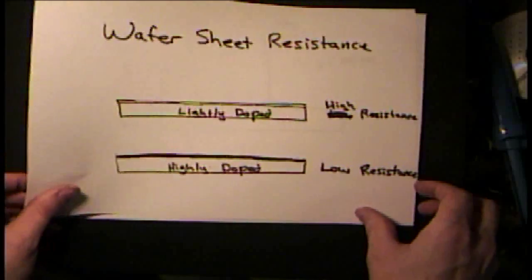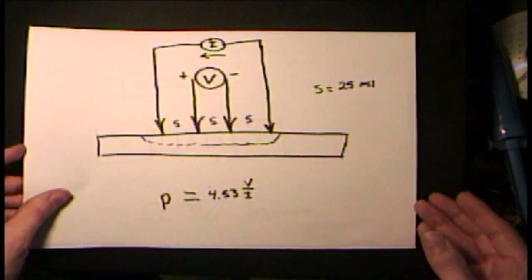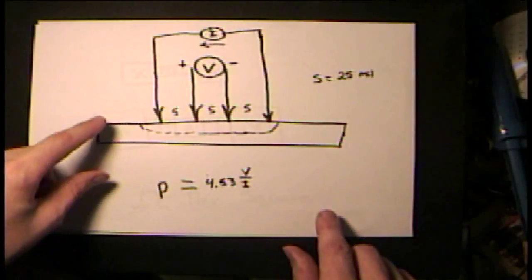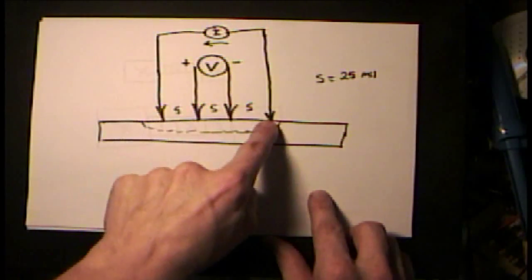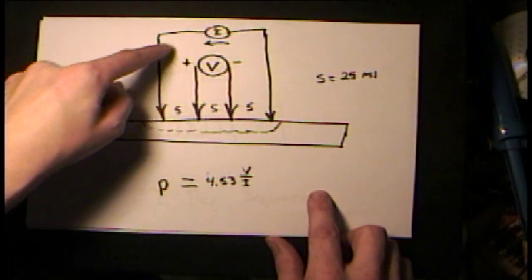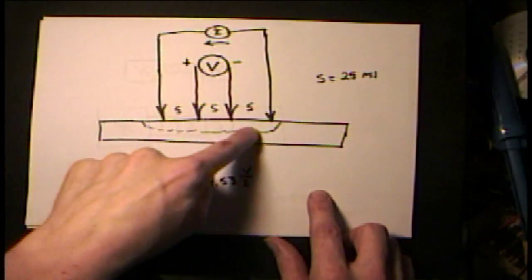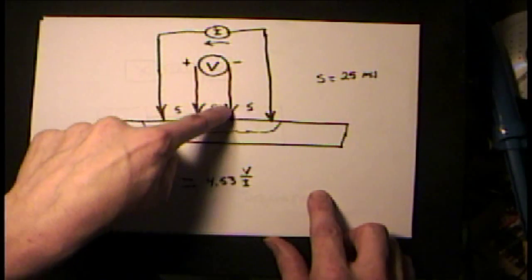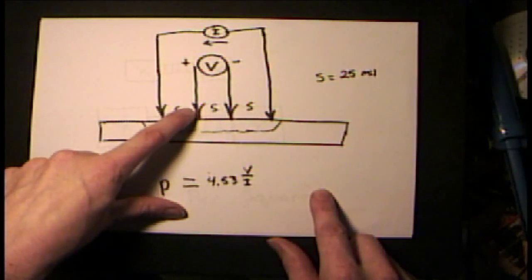And it's important to know the resistance of your wafers. You can do this with a four-point probe. The way a four-point probe works is you have four probes that are evenly spaced together and press against the wafer. You have a current source that is applying a current that's flowing through the wafer. And then you have a voltmeter across the two interior probes that are measuring a voltage.